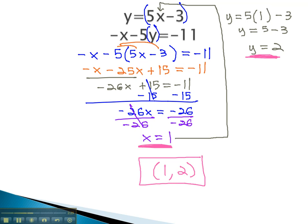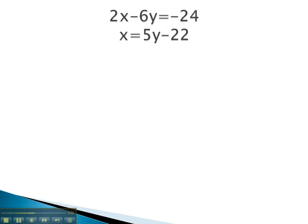Let's try another example where we can substitute an expression in order to find what x and y equal. In this problem, we find this x equals stuff equation. This means in the other equation that x must be the same stuff, and so we can make a substitution to replace it. 2x now becomes 2 times 5y minus 22, in parentheses, minus 6y equals negative 24.